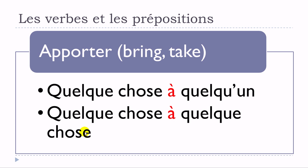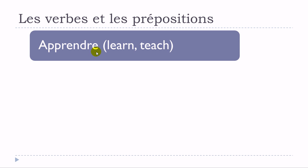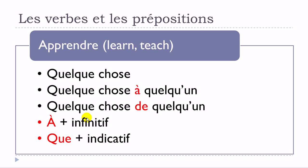Apprendre has two meanings, and the structure tells you which one applies. First structure: apprendre quelque chose — no preposition — connected to the meaning 'to learn.' Second structure: apprendre quelque chose à quelqu'un — connected to the meaning 'to teach.' Third structure: apprendre quelque chose de quelqu'un — connected to 'to learn.'